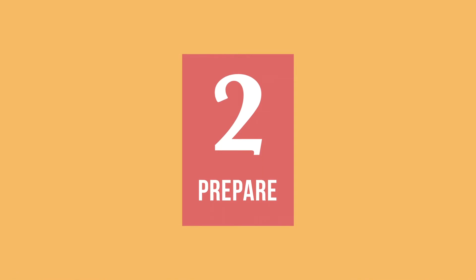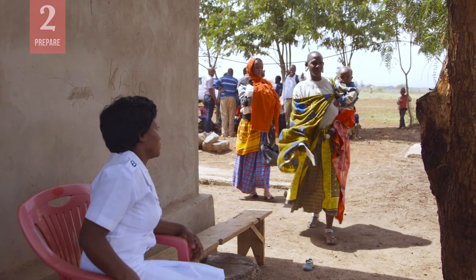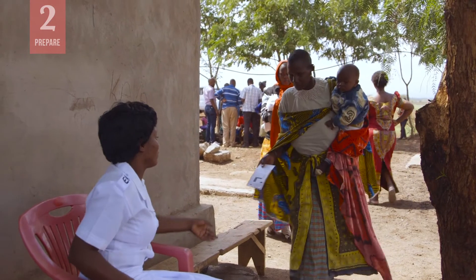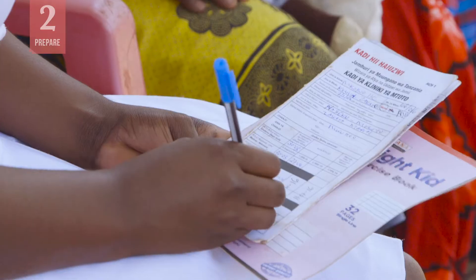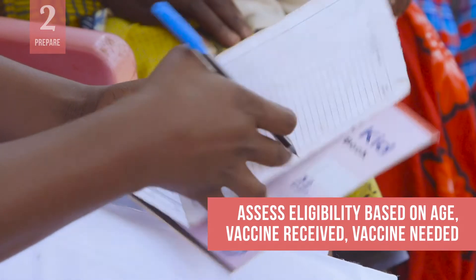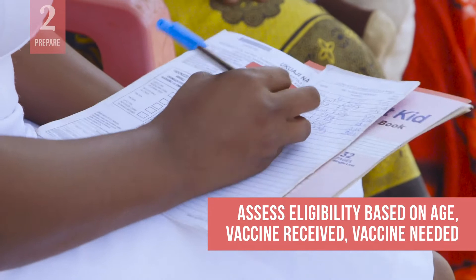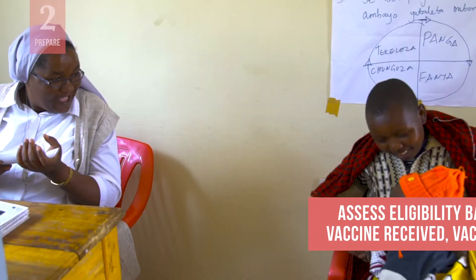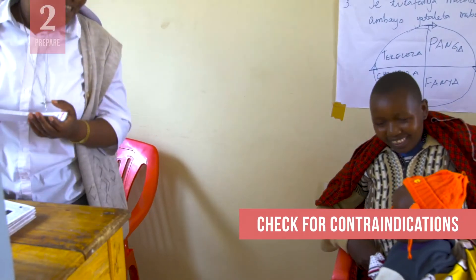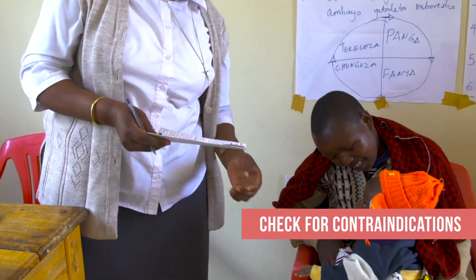Next, make sure the health worker has safely prepared each vaccine for administration. As a first step, did the health worker assess the eligibility of each infant for vaccination? Did she assess based on age, vaccines received per the immunization card, and vaccines needed per the immunization schedule? Did she check to see if there were any contraindications or reasons for withholding the vaccination?